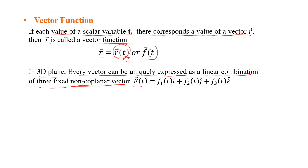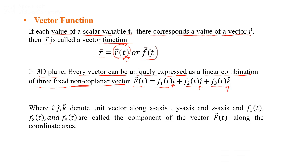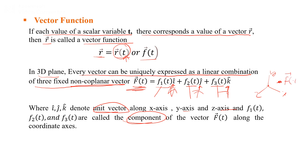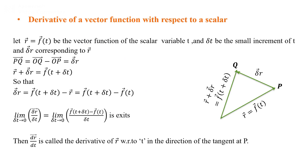We write f(t) as f1(t)·i + f2(t)·j + f3(t)·k, where i, j, k denote the unit vectors along the x-axis, y-axis, and z-axis respectively. The quantities f1, f2, f3 are called the components of the vector f(t) along the coordinate axes, and they are the derivatives of the vector f along those axes.